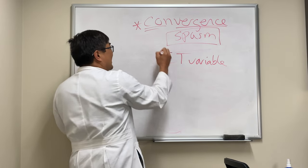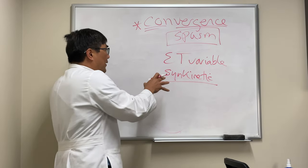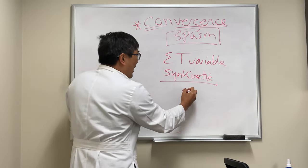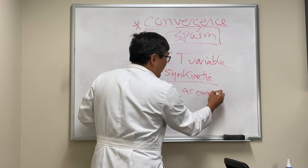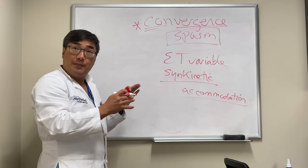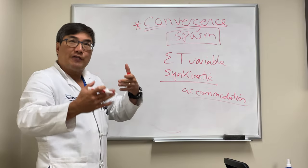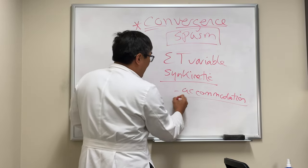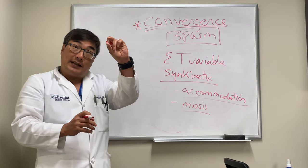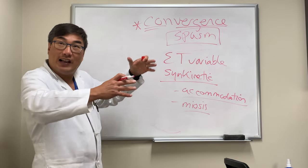Because it's a synkinetic response, it has three pieces of information. Number one, the convergence. Number two, accommodation — so they might get blurred vision during the accommodative spasm component. It changes the refraction by inducing plus power, so they get this refractive shift. And third, miosis of the pupils — the pupils constrict at near, which is part of the near reaction. The near triad is synkinetic; they all happen at the same time.